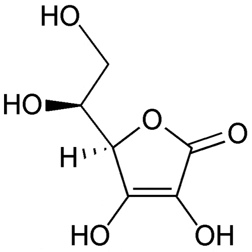In redox processes, the reductant transfers electrons to the oxidant. In the reaction, the reductant or reducing agent loses electrons and is oxidized, and the oxidant or oxidizing agent gains electrons and is reduced. The pair of an oxidizing and reducing agent involved in a particular reaction is called a redox pair. A redox couple is a reducing species and its corresponding oxidizing form, e.g., Fe2+/Fe3+.